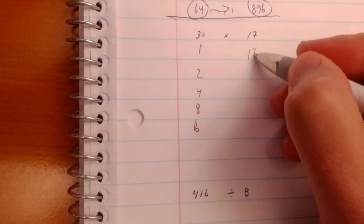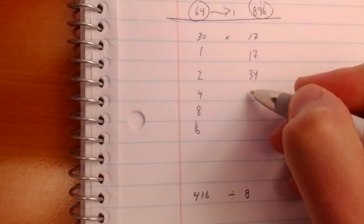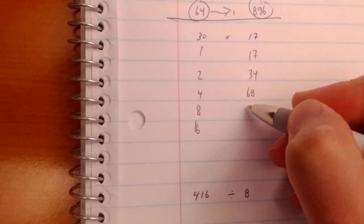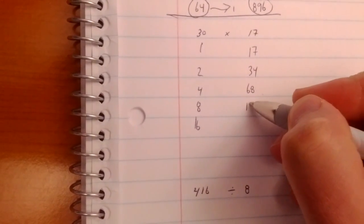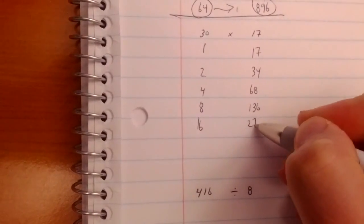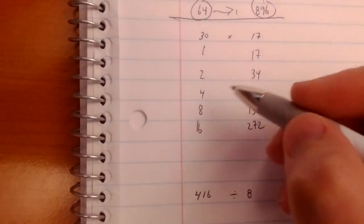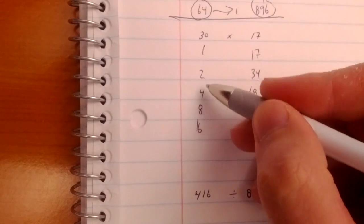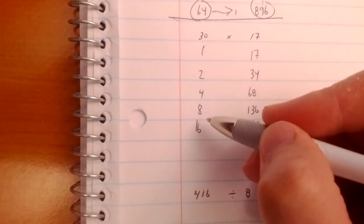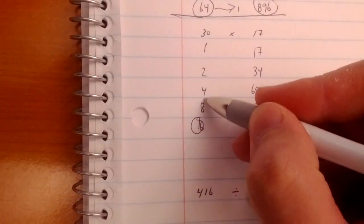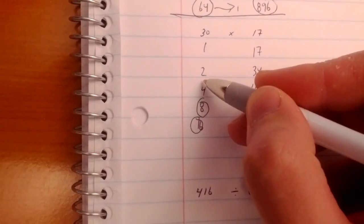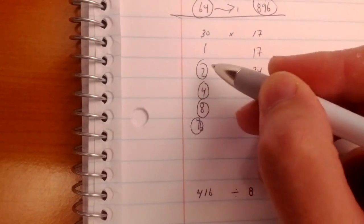So, 17, 34, 68, 136, and 272. All right, again, you add up the numbers here that equal 30: 16 is 24, 28, 30.